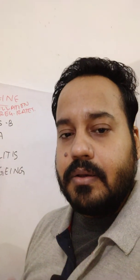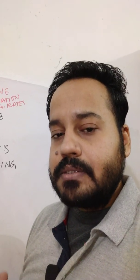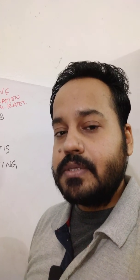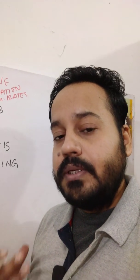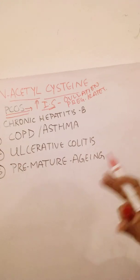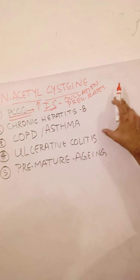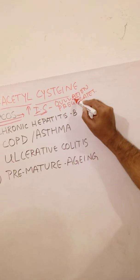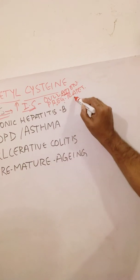When you take ovulation-inducing drugs like clomiphene citrate, these drugs can damage the mucosa of your cervix and that can cause miscarriages. In these conditions, N-acetylcysteine can be very beneficial because it protects your cervical mucosa as it is a mucolytic agent. So it not only induces ovulation, it also helps to maintain and increase pregnancy rates.